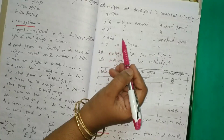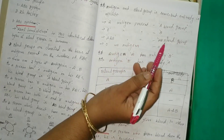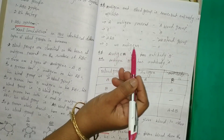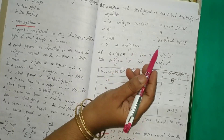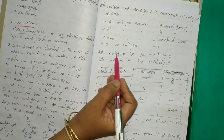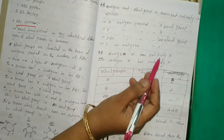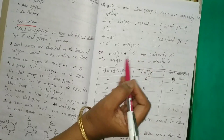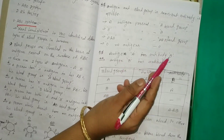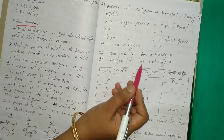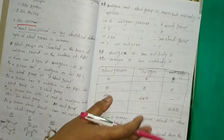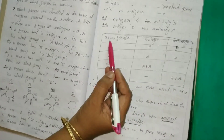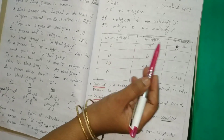A and B antigen present: AB blood group. O means there are no antigens, so it is O blood group. Antigen A has antibody B, antigen B has antibody A — they are opposite. Here is a small table: blood groups A, B, AB, O with their antigens and antibodies.